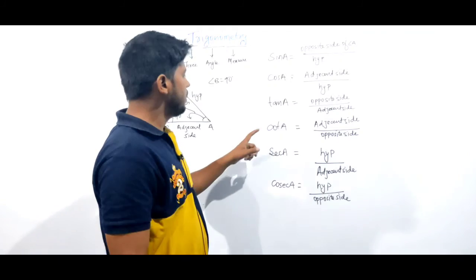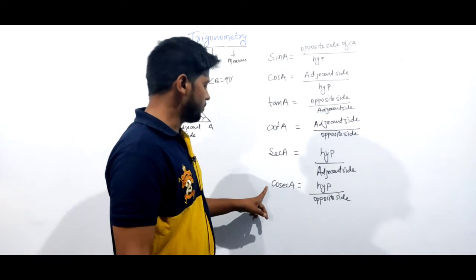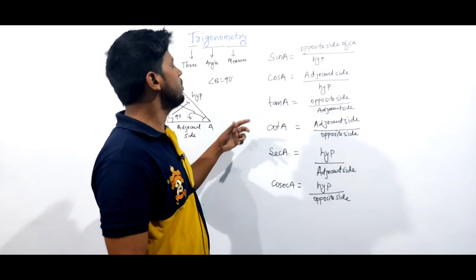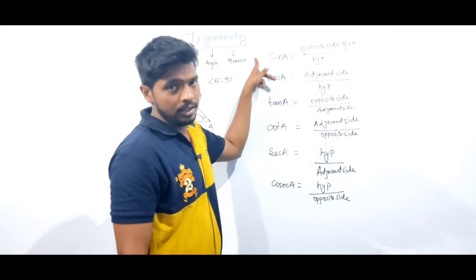We can say that these cot A, sec A, and cosec A are the reciprocals of tan A, cos A, and sin A.